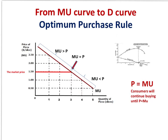What about the fourth one? Am I going to consume the fourth slice of pizza or not? If I buy the fourth slice and eat it, I will get only 1 dollar satisfaction from it, but I have to pay 1.5 dollars. So I am not going to buy the fourth slice because the price will be greater than the additional satisfaction I am going to get. Consumers will stop buying at the point where price equals marginal utility. This relationship is called the optimum purchase rule, and it states that consumers will continue buying until price equals marginal utility.